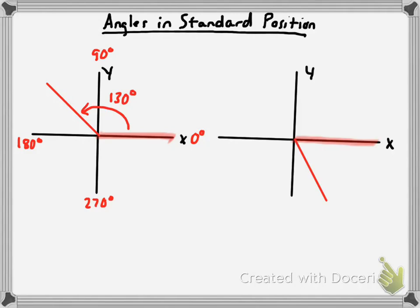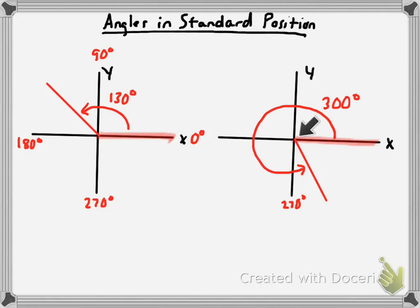Let's draw another angle in standard position. It always starts at the initial side on the positive x-axis and goes around to the terminal side. Let's say that's a 300 degree angle — because if we have zero, 90, 180, and 270 degrees, you can see why that would be 300 degrees. The vertex is always going to be the origin for an angle in standard position.